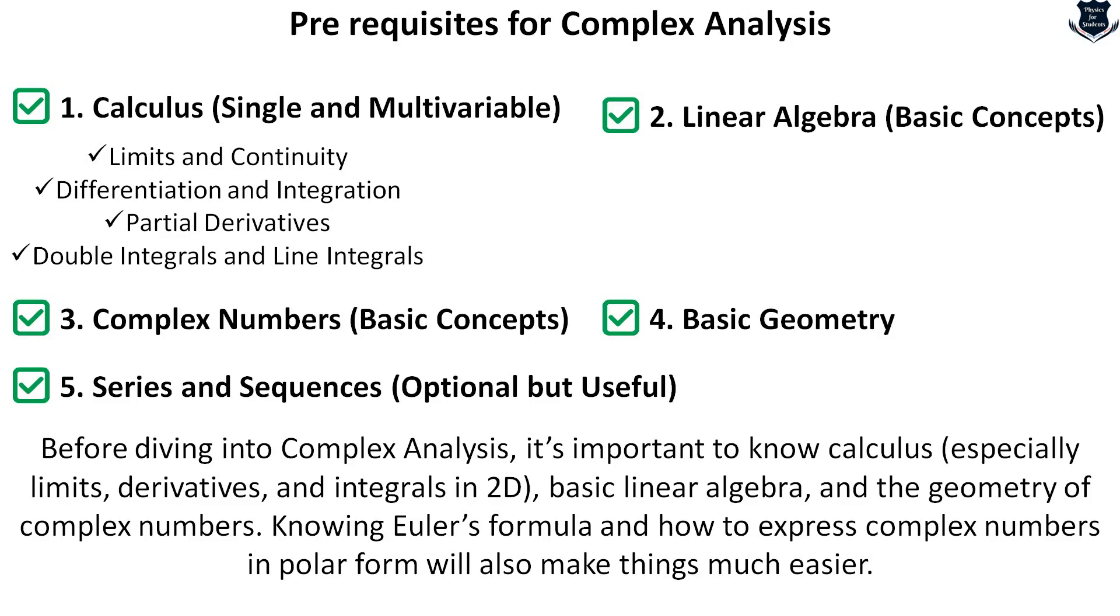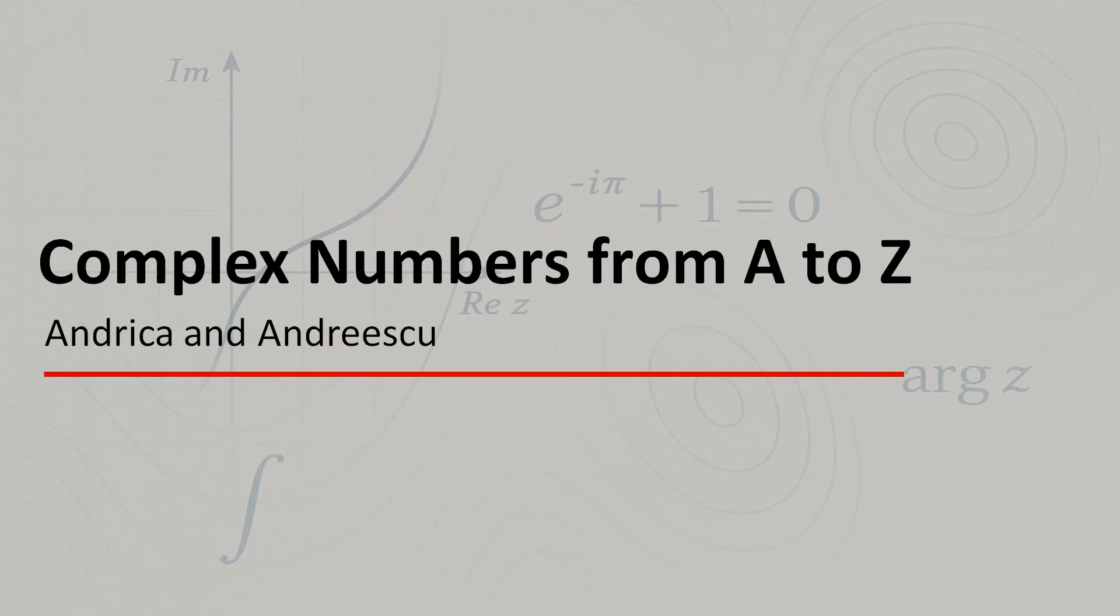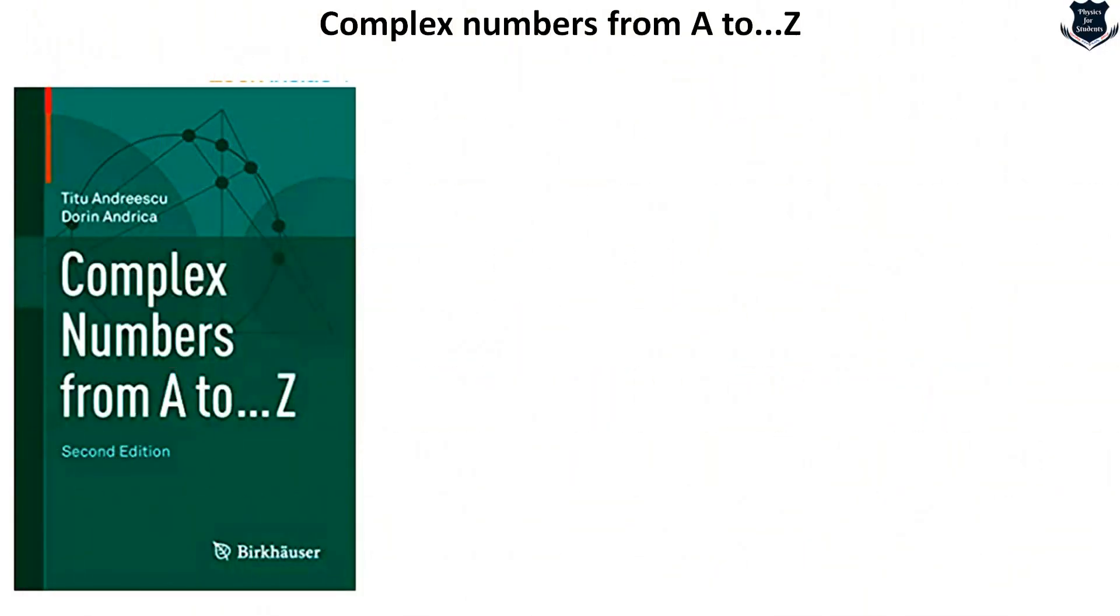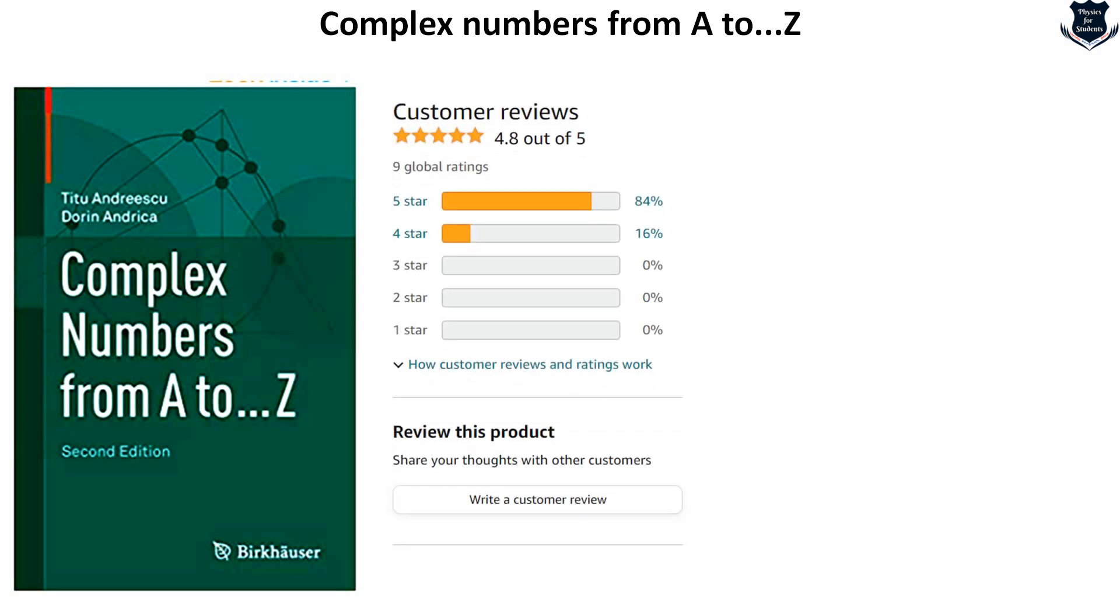Having understood what is complex analysis, why do we need complex analysis, how complex analysis differentiation is different from real analysis and the prerequisites, it is now time to move on to the first book. As I would recommend, the very first book would be to get a very good understanding of complex numbers. For that I would recommend this book of Andrescu and Andrika, Complex Numbers from A to Z.